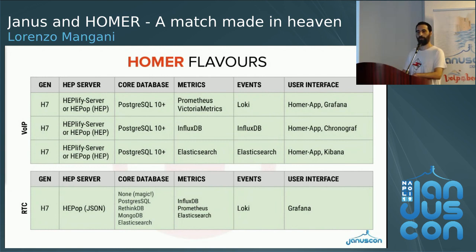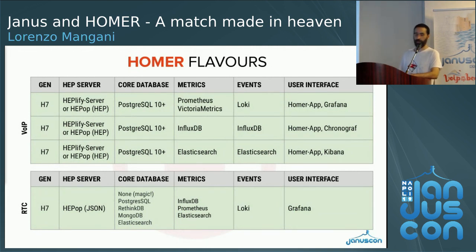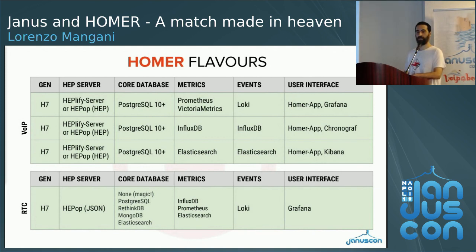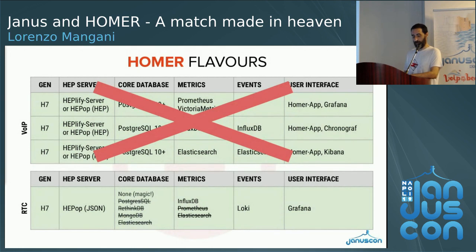There are a few flavors of Homer — nowadays really dozens. We have a repository, Homer 7 Docker on our GitHub, where you can find all the options we have assembled. You can build it sending metrics to Prometheus, Victoria Metrics, InfluxDB, Elasticsearch, and beyond. You can use different types of backends and even different user interfaces. Today we're going to use only HEPOP, one of our capture servers. We're not going to use a core database — we're just going to log everything as events and write metrics to InfluxDB. The UI today will be Grafana.